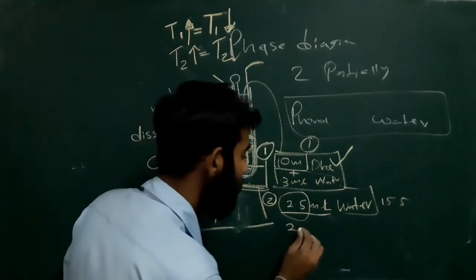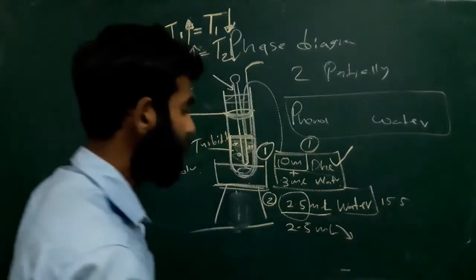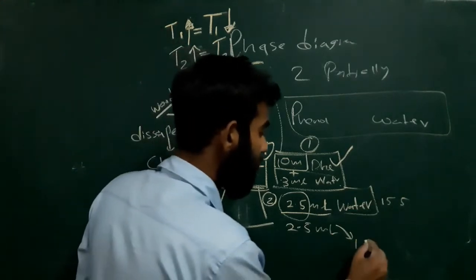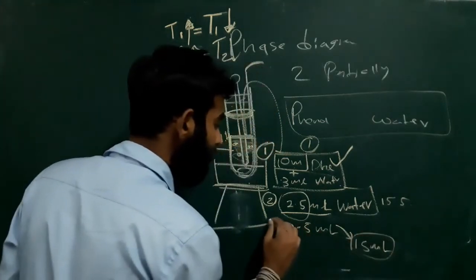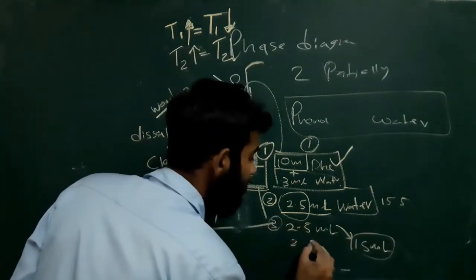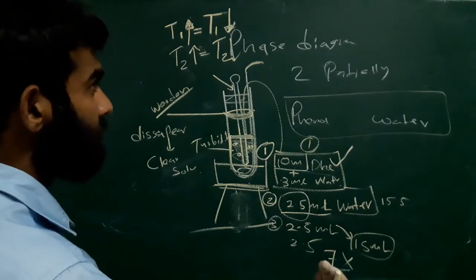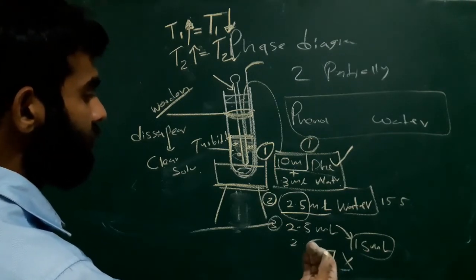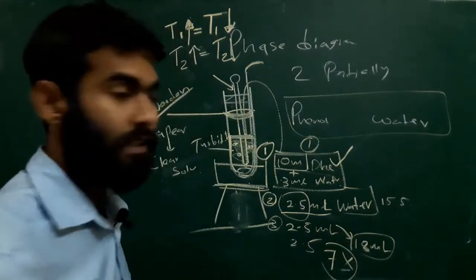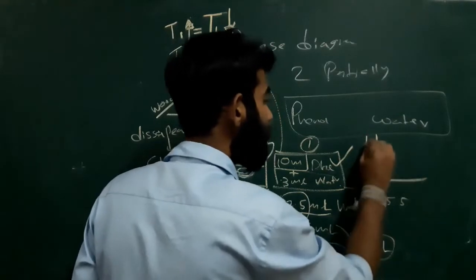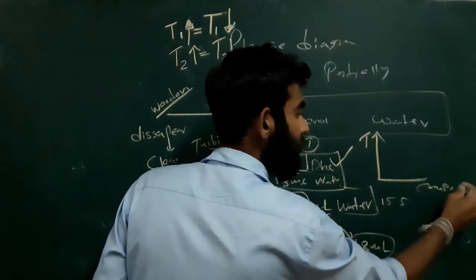Likewise, we will increase water by 2.5 ml increments again. We will increase water up to 15 ml total added. The total added water volume will reach 15 ml after doing this about 7 times. After 7 times, we will compile our data as temperature versus composition of phenol.